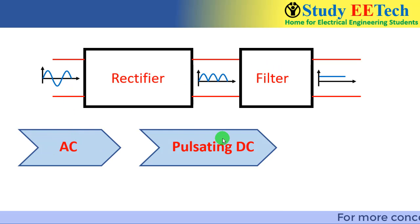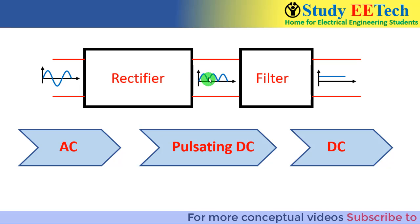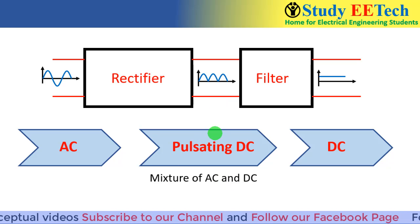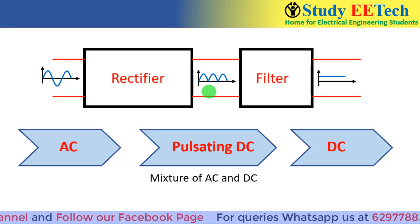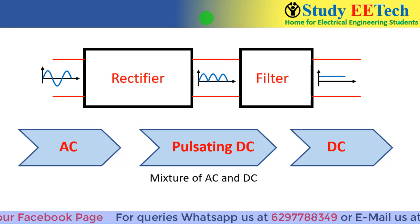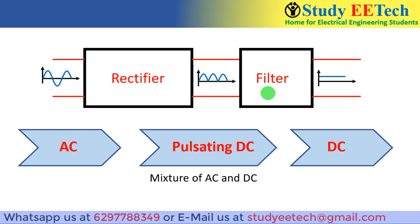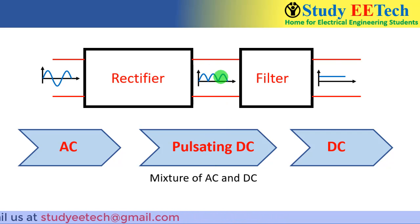In the pulsating DC stage, the output voltage can be considered a mixture of AC and DC — we discussed this in the full wave rectifier video, so watch those sequentially. The purpose of the filter is to filter out the AC part from the pulsating DC and provide us a smooth DC output.